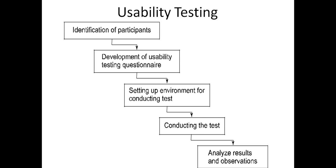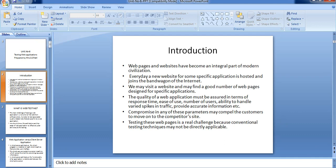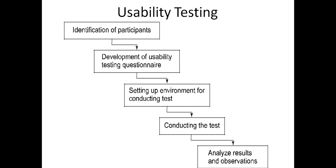The third step is setting up the environment for conducting the test. This step involves deciding and setting up the location for conducting the usability test. The decision of location and setup is based on various factors: whether tester interaction with the user is required, whether enough space is available at the developer or tester site, whether the location is easily accessible to target participants, what requirements will be needed, how many participants or observers will be required, and whether testing is required at multiple geographic locations. The fourth step is conducting the test, which consists of execution of the usability testing.